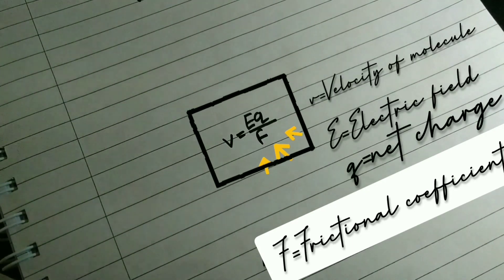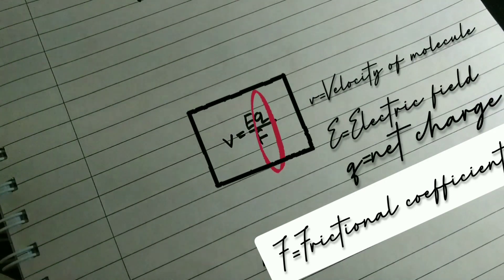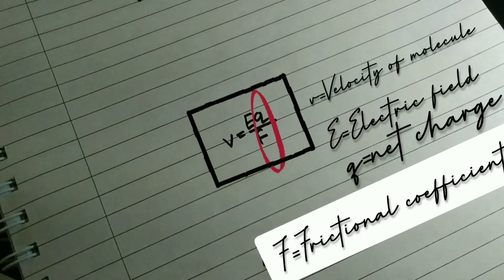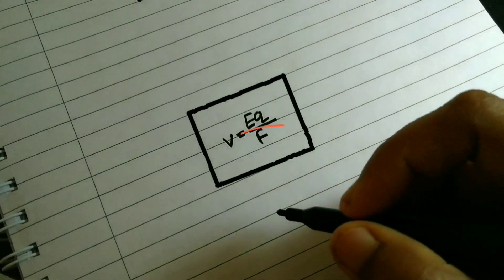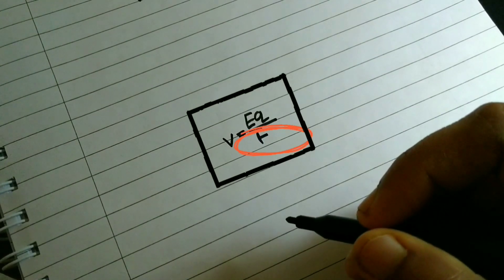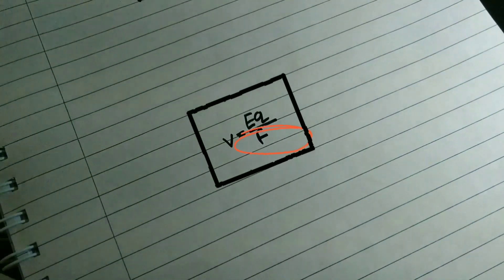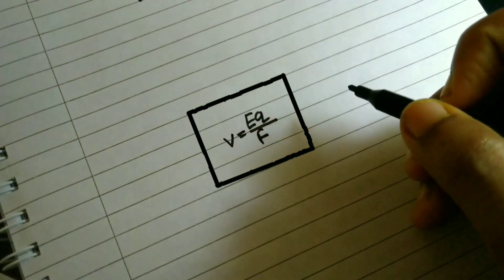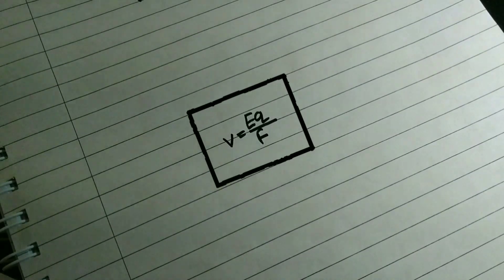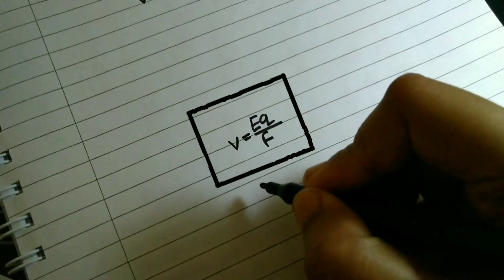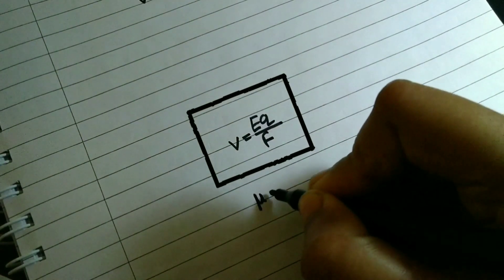The applied voltage E in the equation is usually held constant. Therefore, a charged molecule depends only on the ratio Q/F. For molecules of similar conformation — such as a collection of linear DNA fragments or spherical proteins — the frictional coefficient F varies with size but not shape. Under such conditions, molecules migrate in an electric field at a rate proportional to their charge-to-mass ratio.